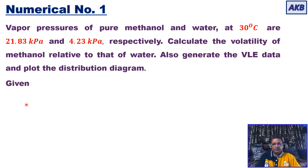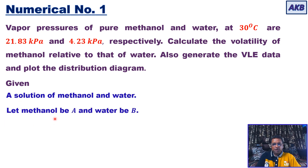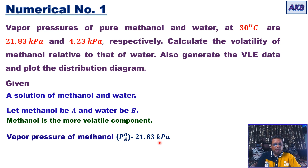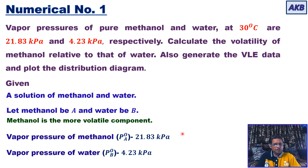Let us identify what is given. We have a solution of methanol and water. Let us denote methanol by A and water by B for simplicity. At 30 degrees Celsius, the vapor pressure of methanol (Pa0) is 21.83 kilopascal and the vapor pressure of water (Pb0) is 4.23 kilopascal. Since methanol has a higher vapor pressure than water, methanol is the more volatile component.